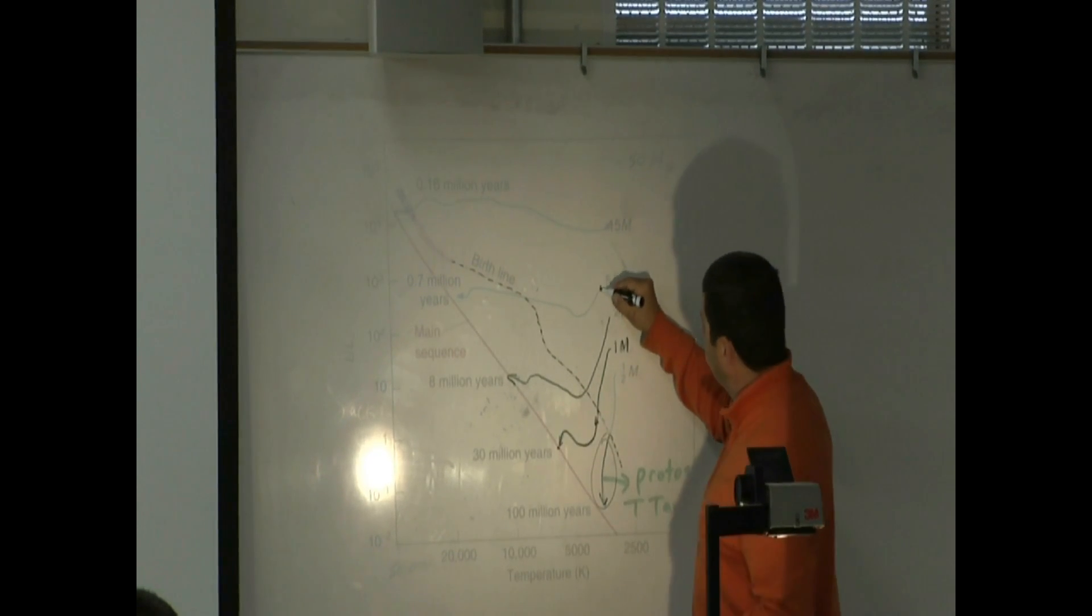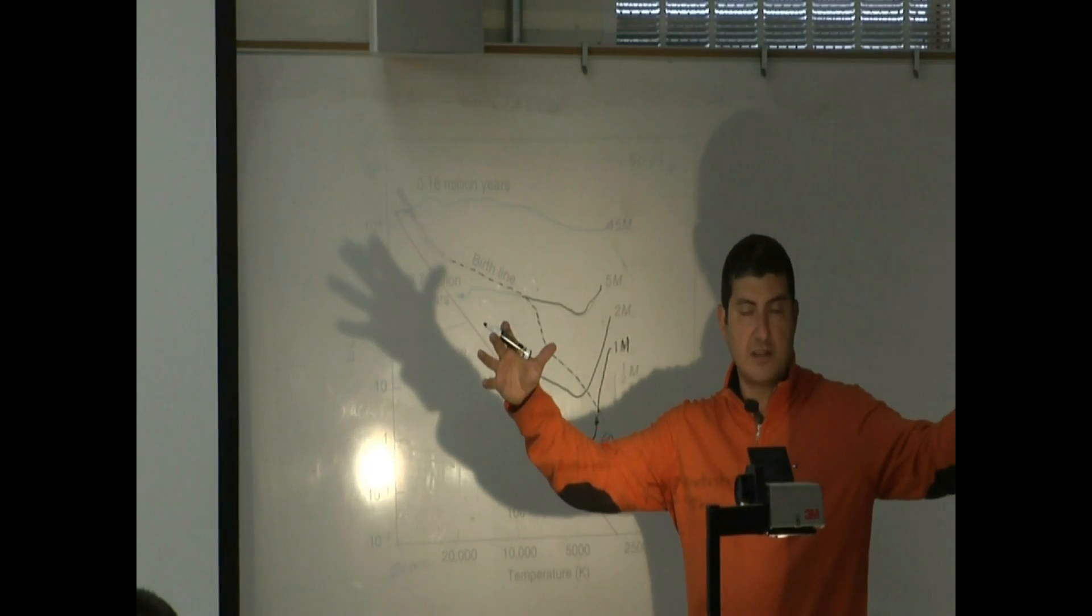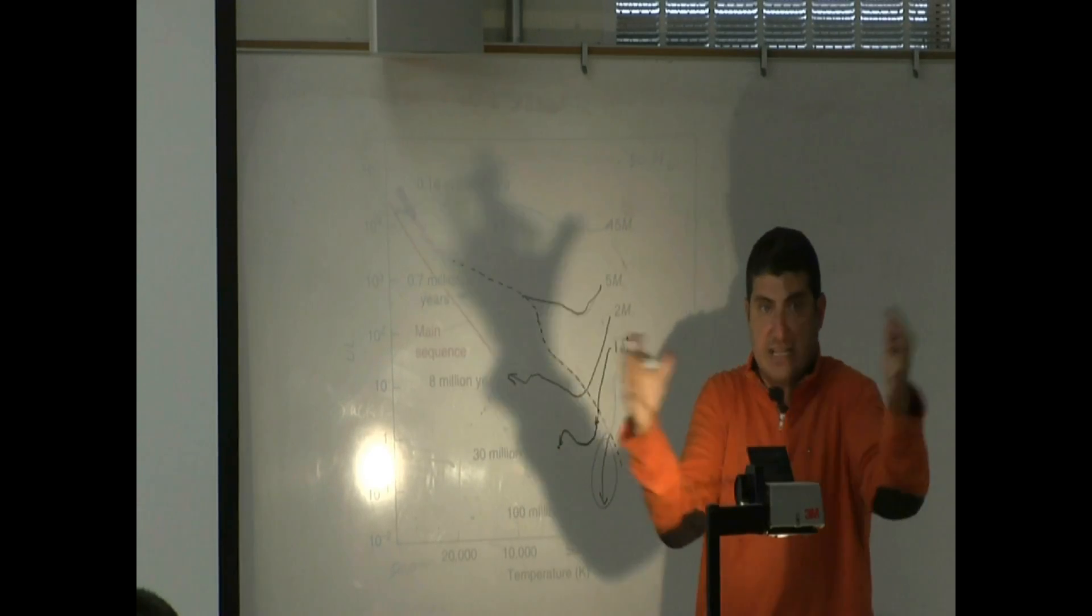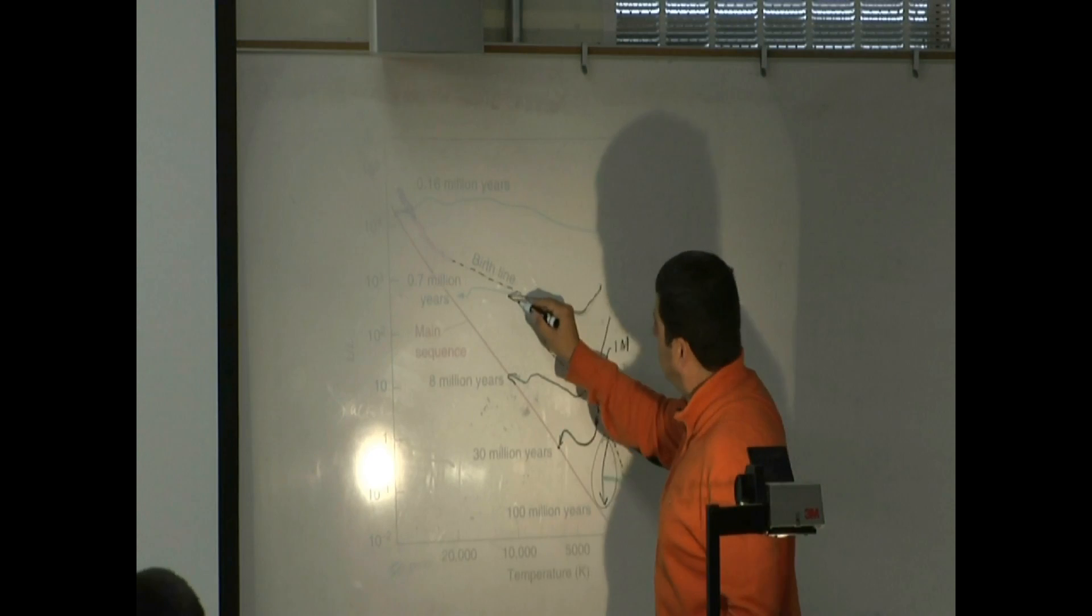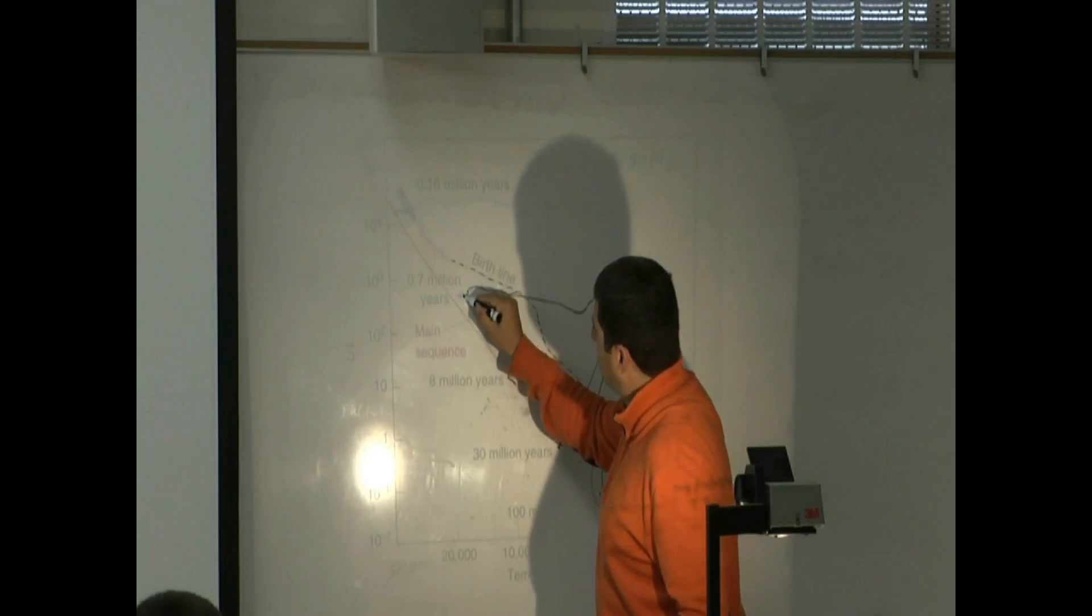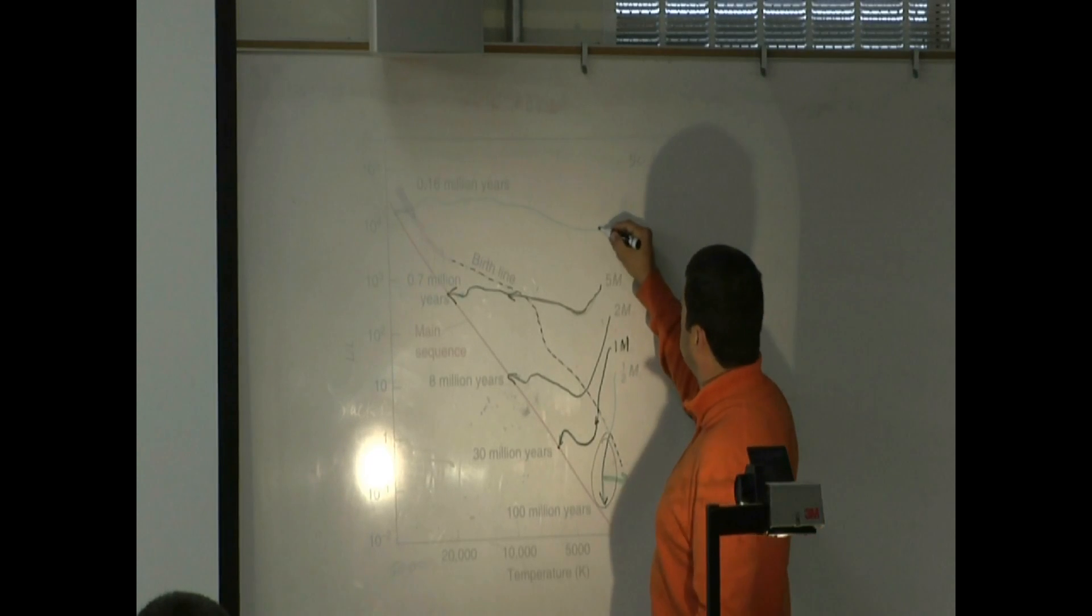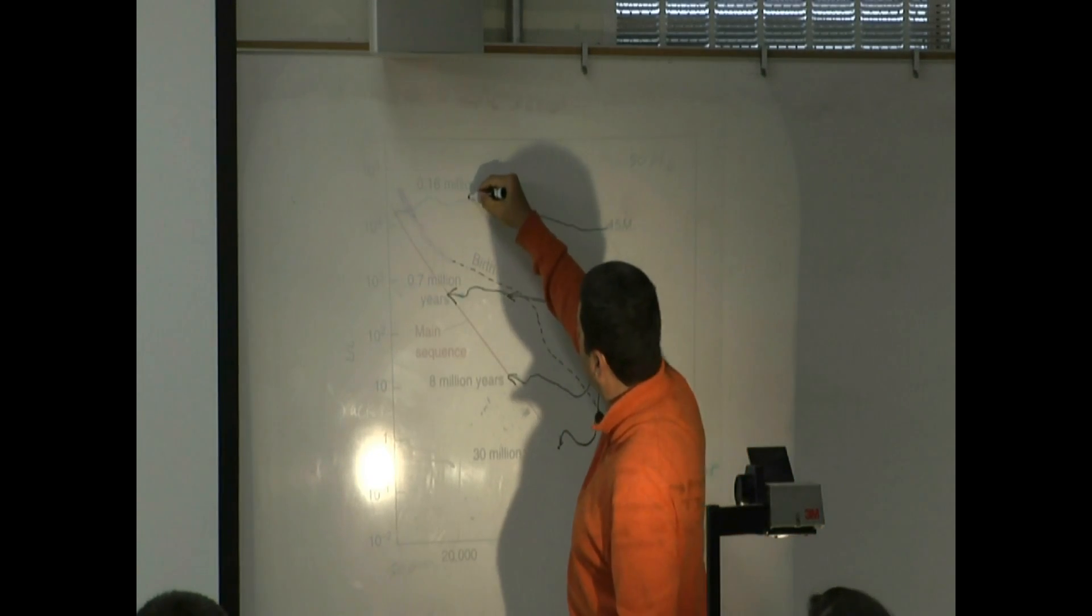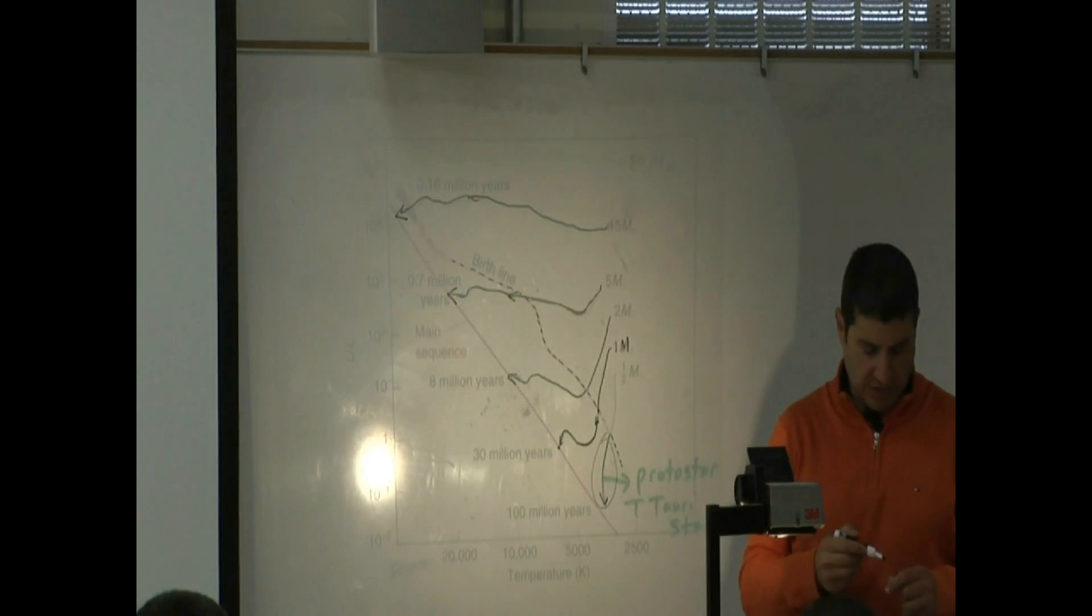Five times the mass of the sun. Collapses, gets very hot. Why? Because it has more mass. Gets very hot and big. It can't collapse a lot. It crosses the birth line, gets bigger and hotter, and goes on the main sequence. Fifteen times the mass of the sun. So you can see the pattern. And then lies on the main sequence right there. So then it becomes a main sequence star.